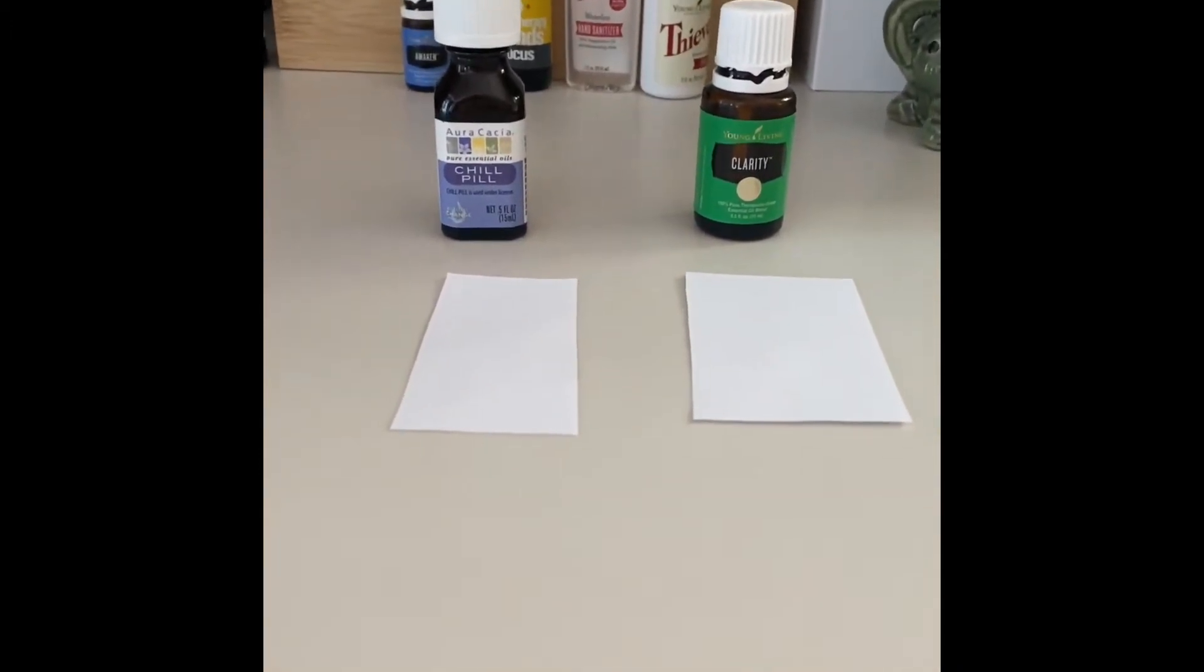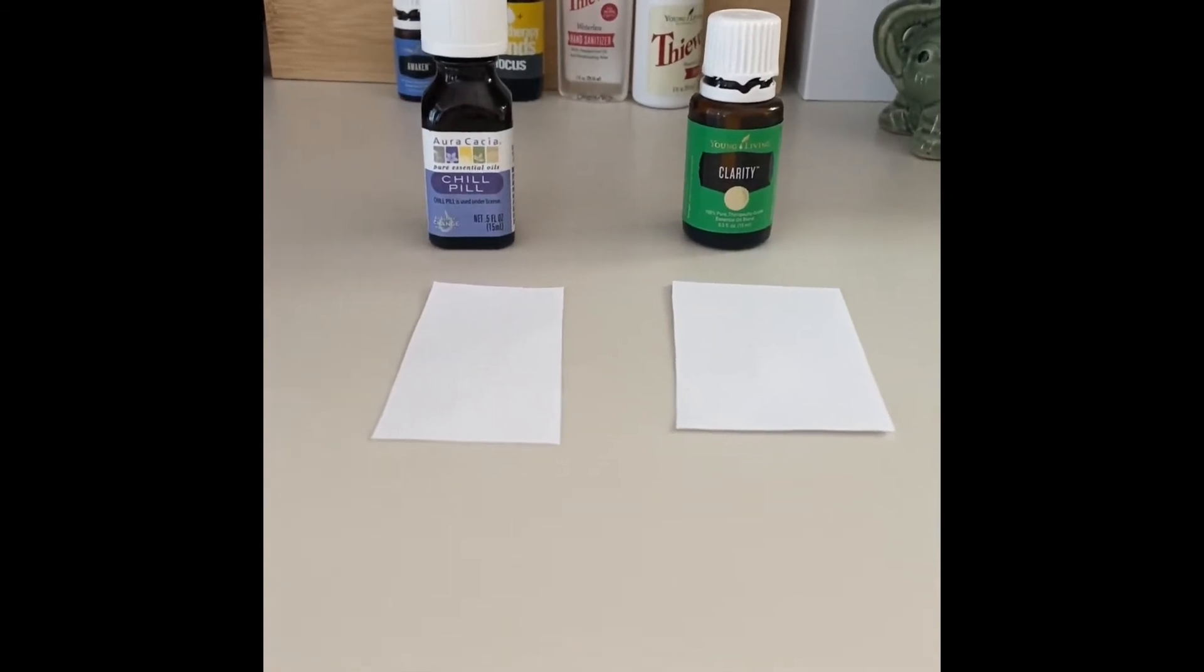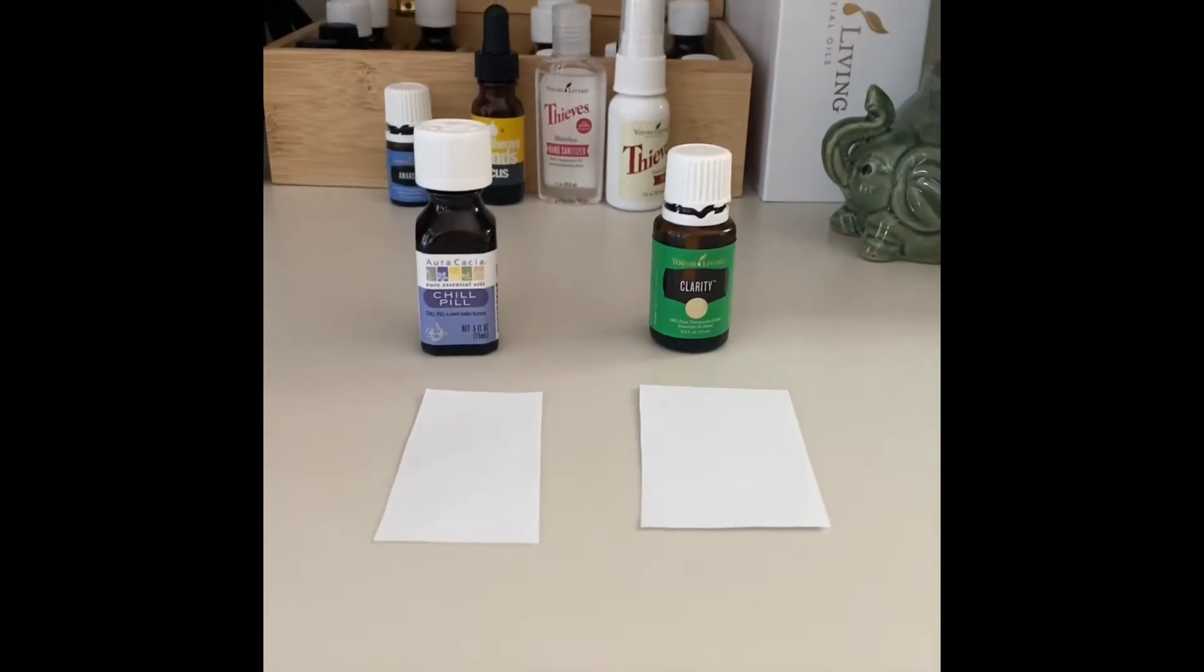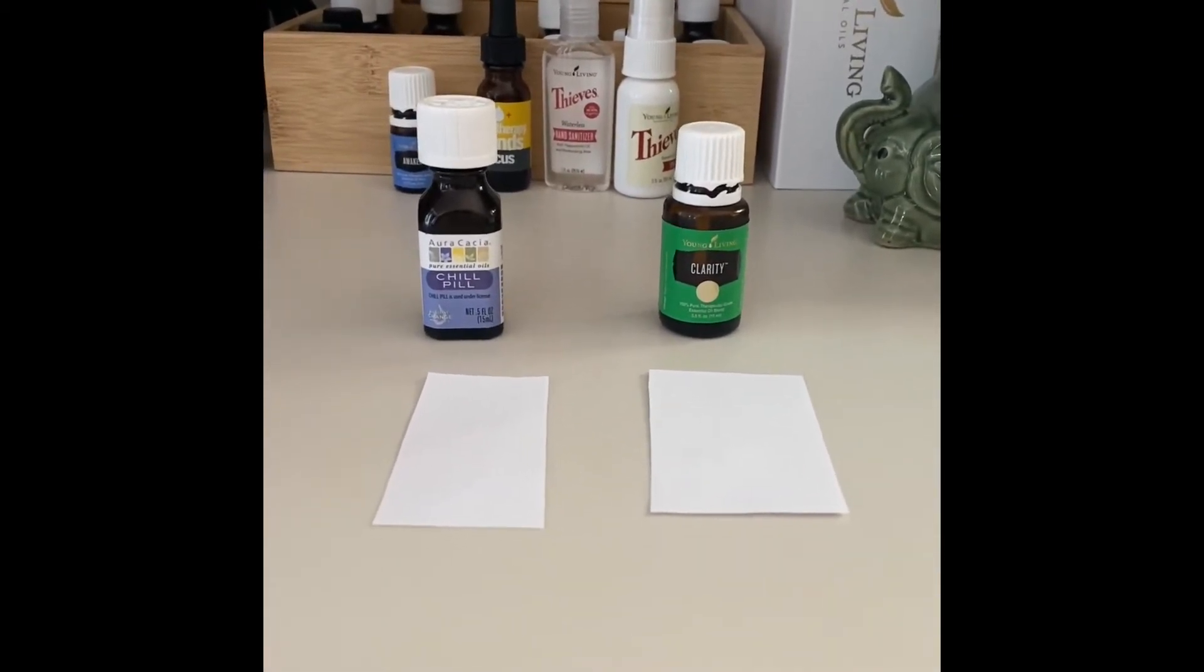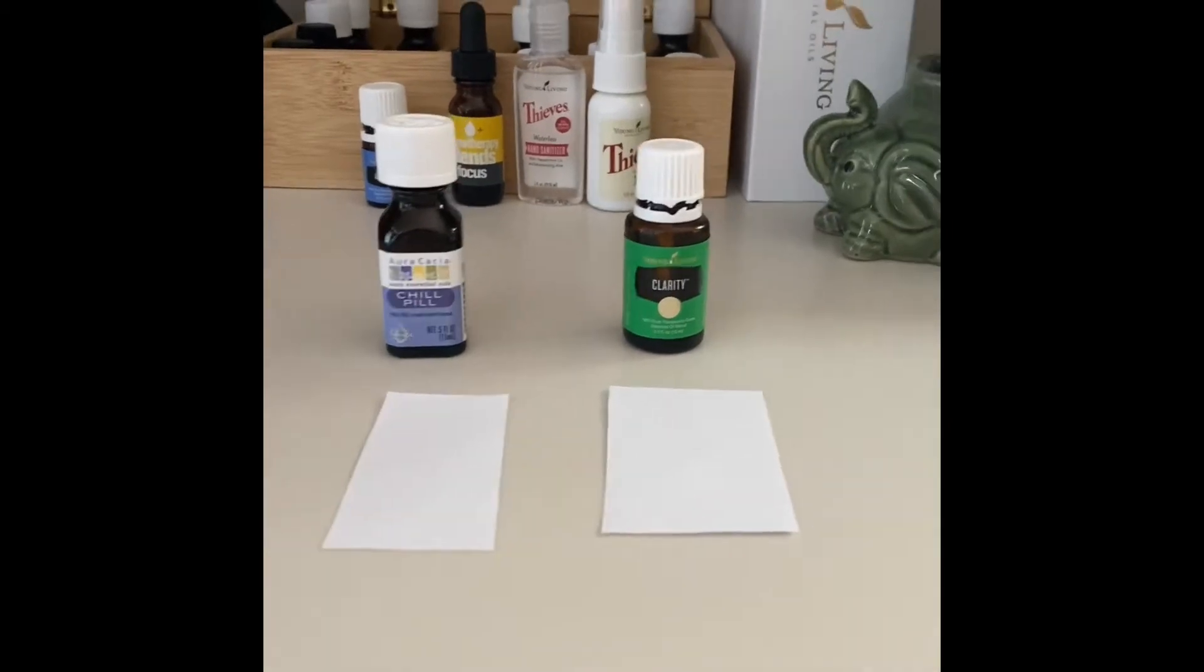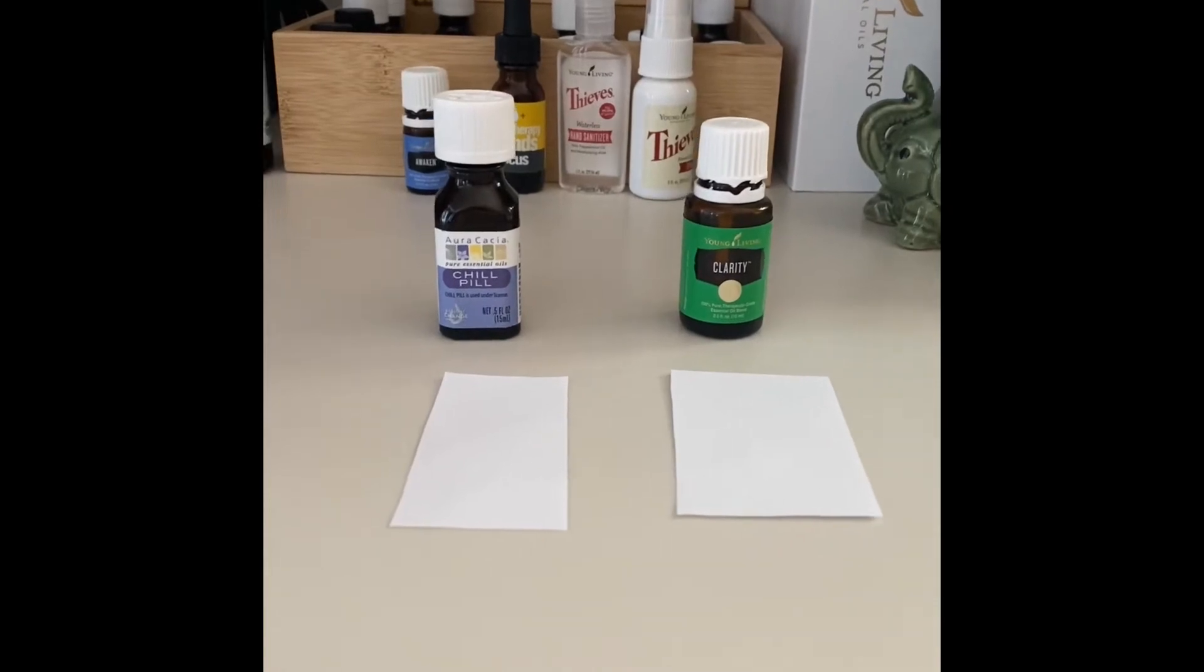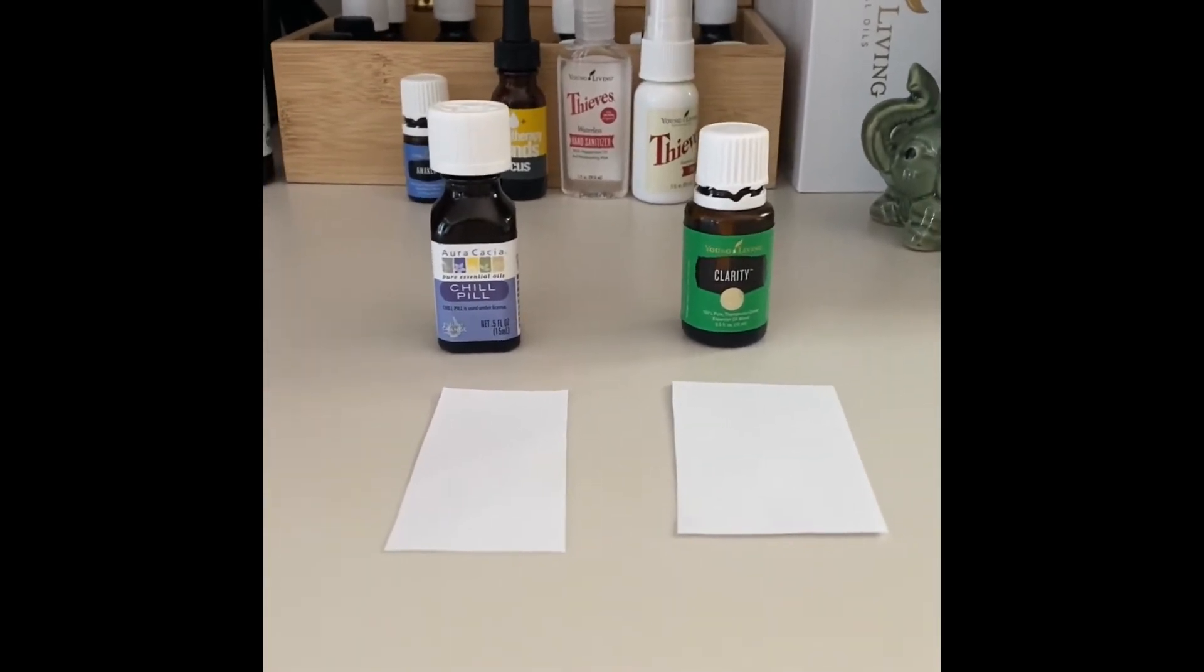You let them sit for an hour and come back to the piece of paper. If it's a pure oil, everything will have evaporated leaving nothing on the paper. If it is not a pure essential oil, it'll leave a ring on the paper, and that's the substance that they've added to the essential oil that ultimately dilutes the oil.